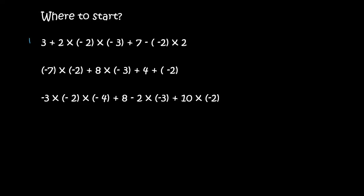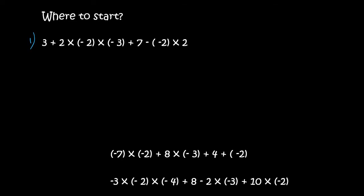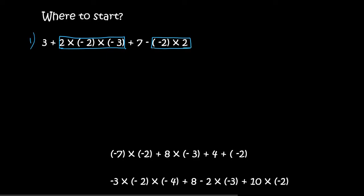So if I start number one — let me just label this number one, number two, number three. The first thing I look for is times and divide. So here I've got a two and then all of this is times. I underline that and then I see another times over here. So you put a block around that, and then a block around that. You can then go solve those parts only.